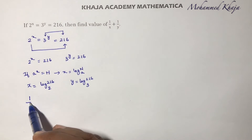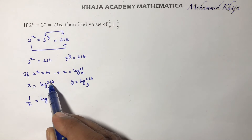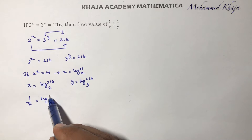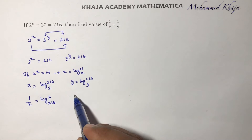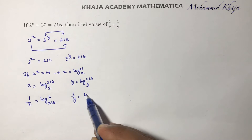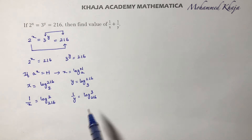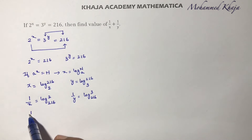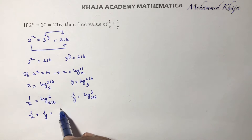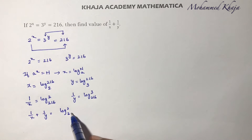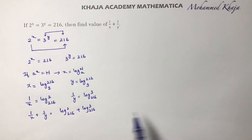But I need the values of 1 by x plus 1 by y. So 1 by x — the logarithm will become its reciprocal — is log 2 to the base 216. And 1 by y equals log 3 to the base 216. Now 1 by x plus 1 by y equals log 2 to the base 216 plus log 3 to the base 216.